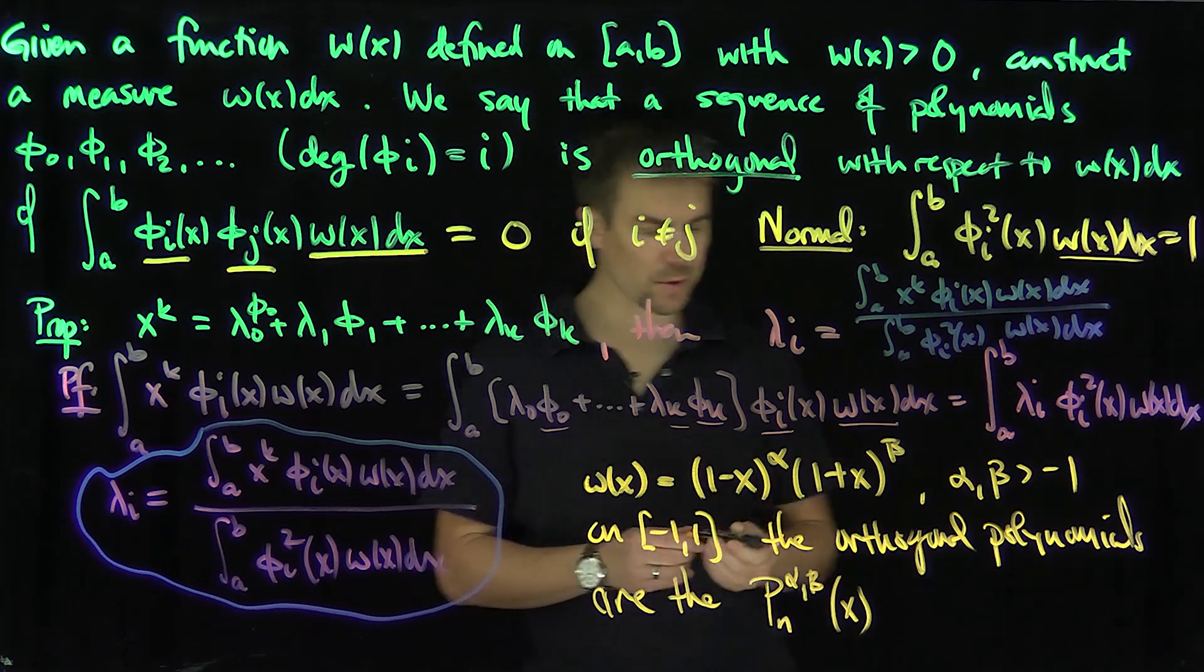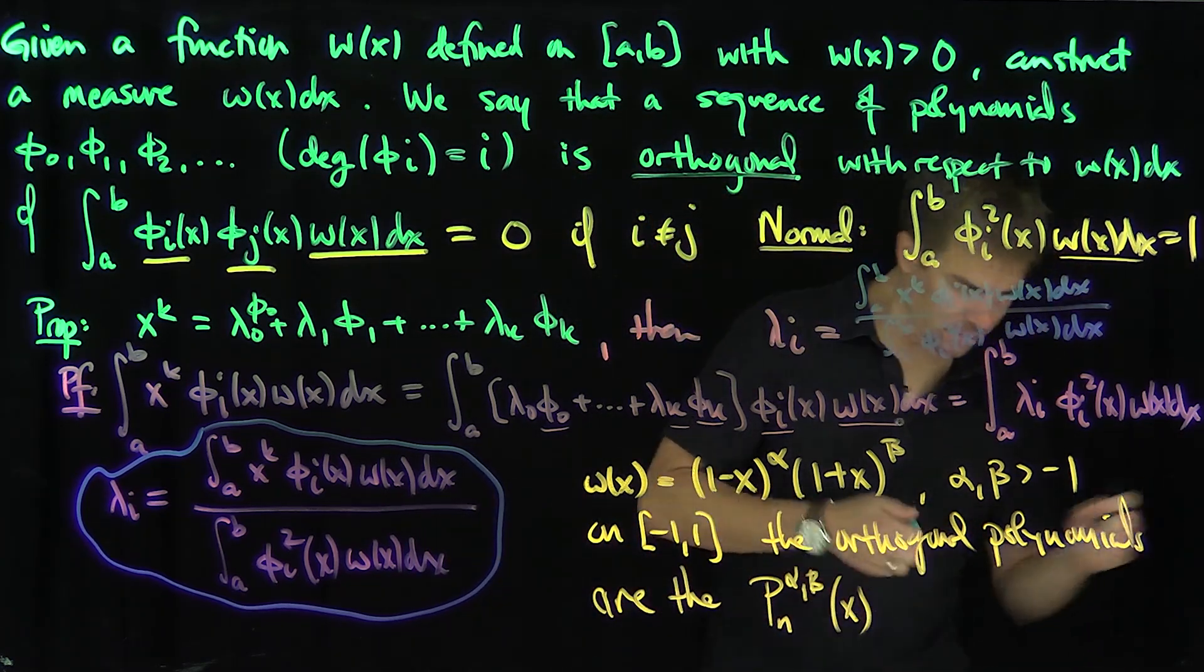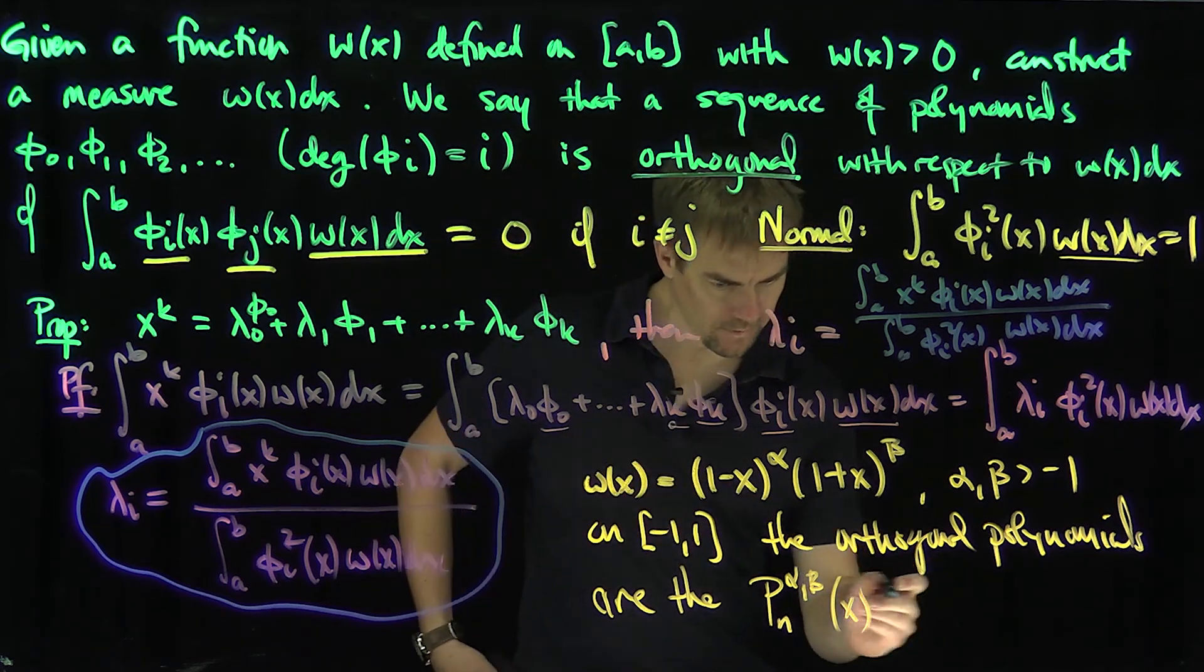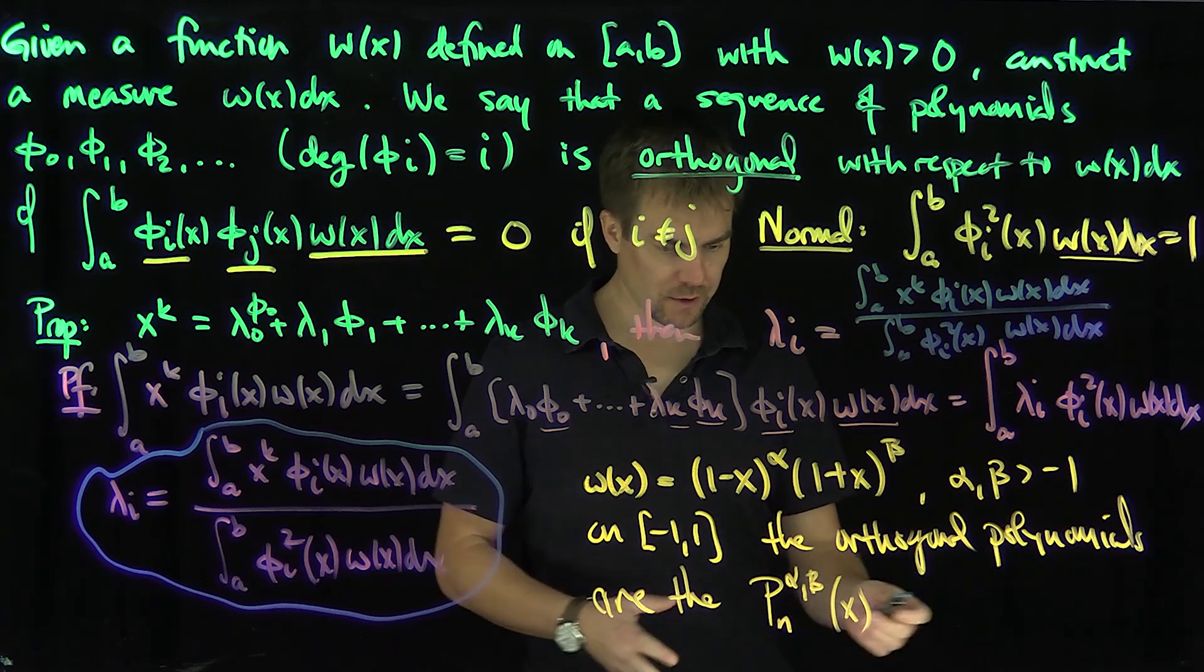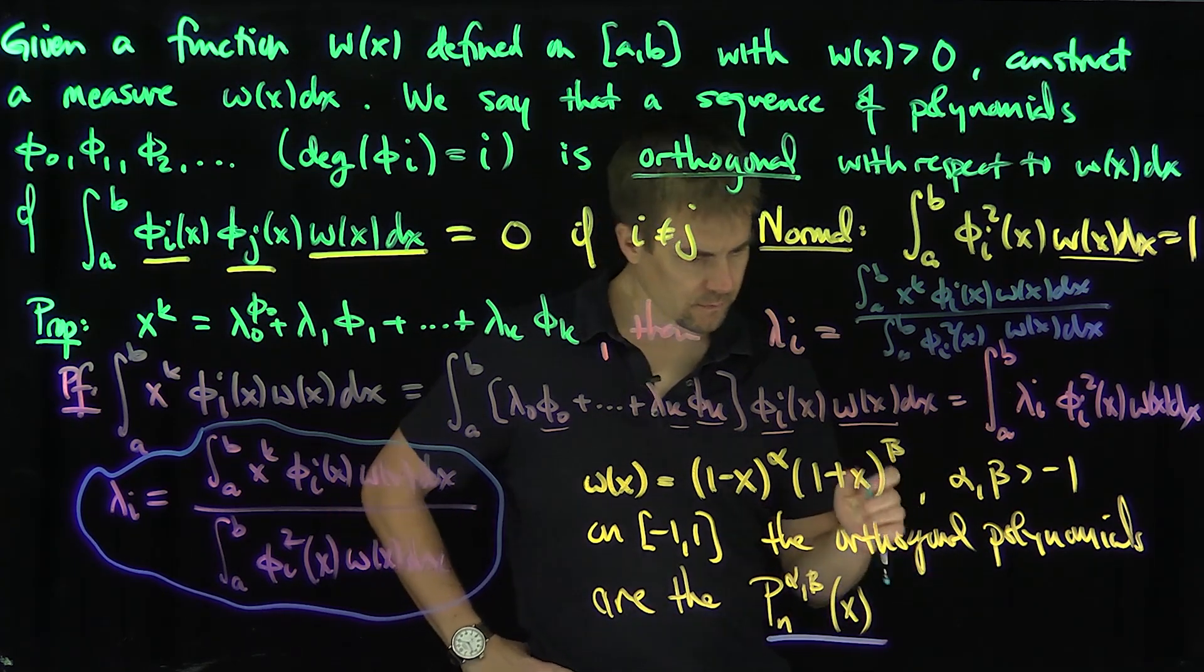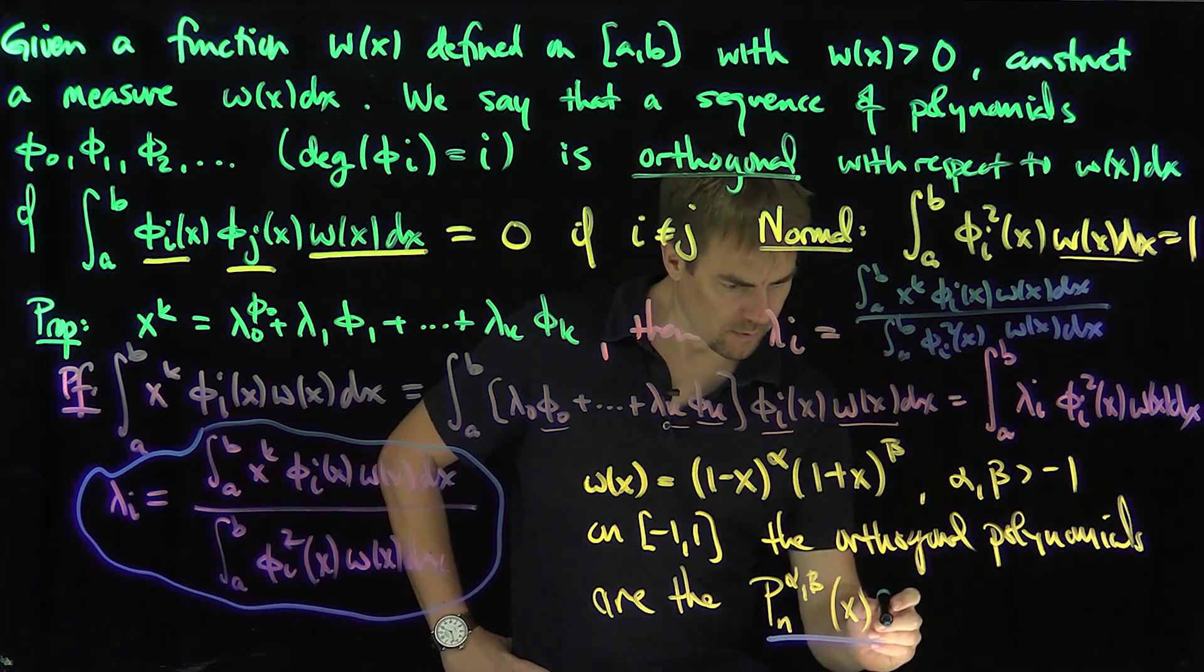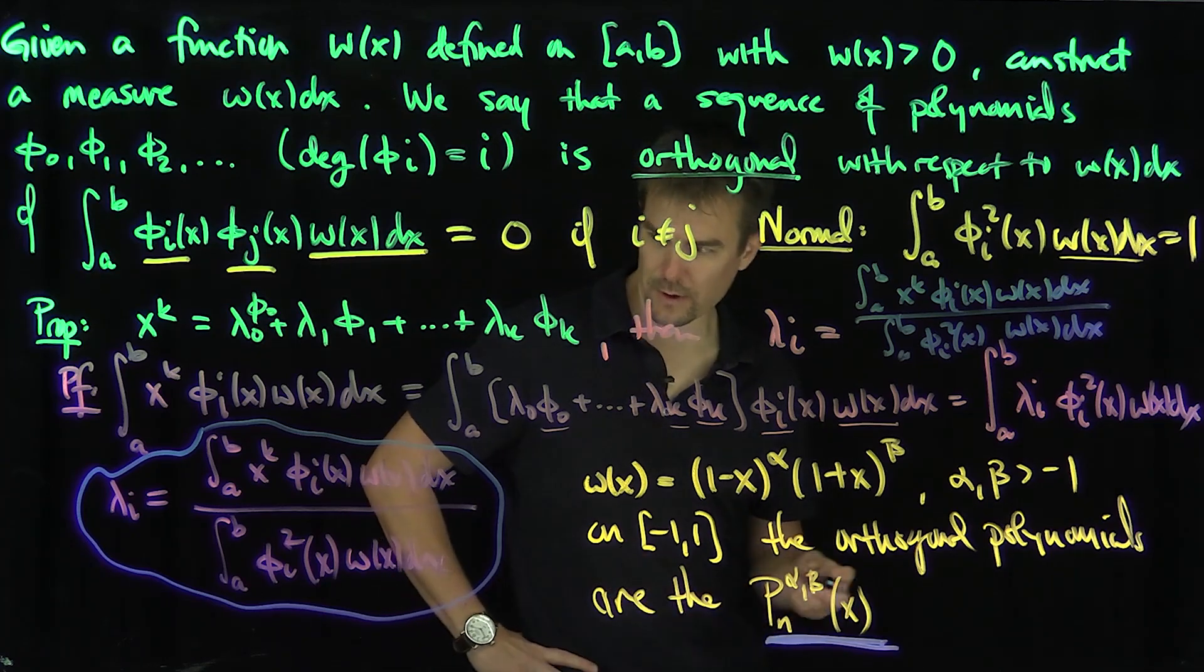Then these functions, the orthogonal polynomials are called the functions P_n^(α,β)(x). These ones are special orthogonal polynomials, and these ones are called more generally, it's a general class, the P_n^(α,β). The name is just eluding me at the second, but we'll figure it out.